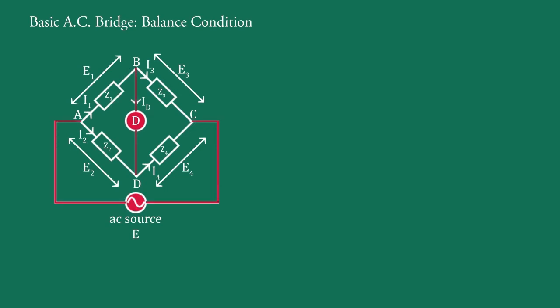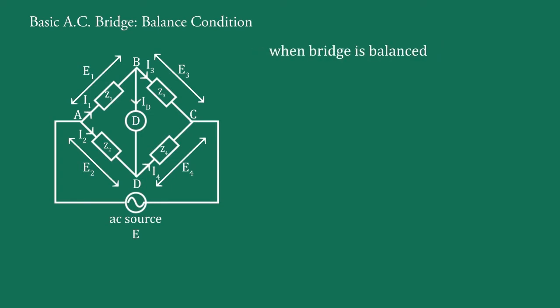The detector D and AC source are connected at opposite nodes. When the bridge is balanced, current through the detector becomes zero, that is Id = 0, and potential difference between points B and D becomes zero, that is Vbd = 0. Since Id = 0, the detector circuit is open, therefore I1 = I3 and I2 = I4.